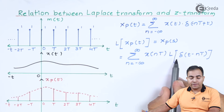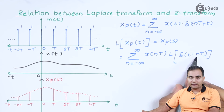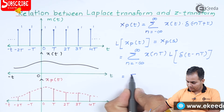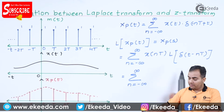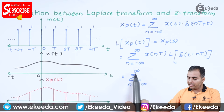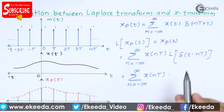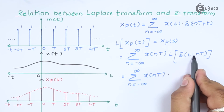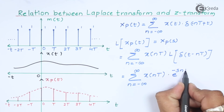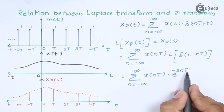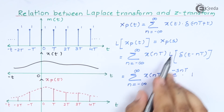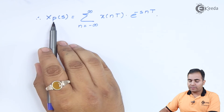Now I'm going to use the time shifting property of Laplace transform. If the function is delayed by some value, we always multiply e to the power of minus s times that value. So applying the time shifting property: the summation goes from minus infinity to infinity, then x(nT), and since the function is delayed by nT, we write e to the power of minus snT. The Laplace transform of delta(t) is 1, so Xp(s) is nothing but this expression.